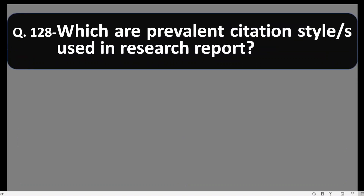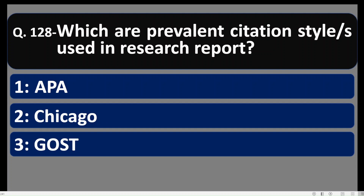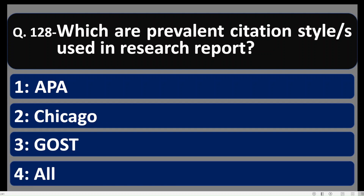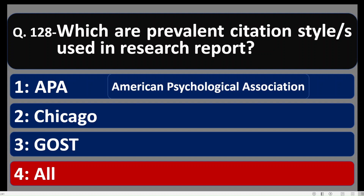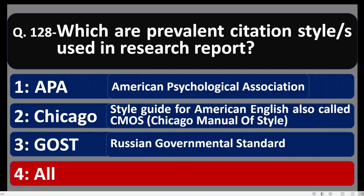Question number 128: Which are prevalent citation styles used in research reports? The correct option is all — APA (American Psychological Association), Chicago Style Guide (also called CMOS, Chicago Manual of Style), and GOST (Russian government standard) are all different styles of writing citations in a research report.